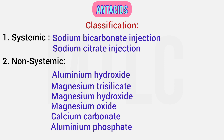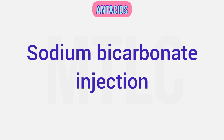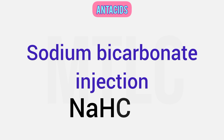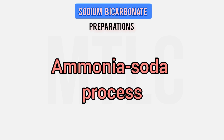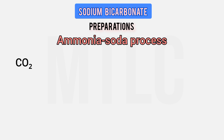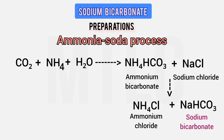Let's talk about each one. First, sodium bicarbonate. Its formula is NaHCO3, also known as baking soda. Sodium bicarbonate is prepared by the ammonia soda process. We add ammonia and water to prepare ammonium bicarbonate. To this ammonium bicarbonate, we add sodium chloride, giving ammonium chloride plus sodium bicarbonate.